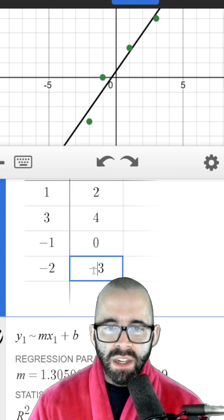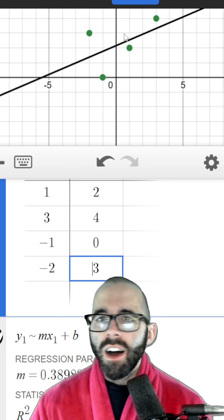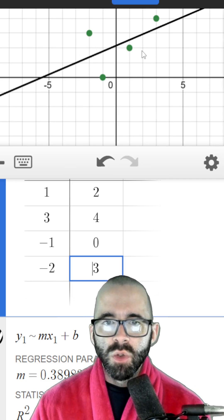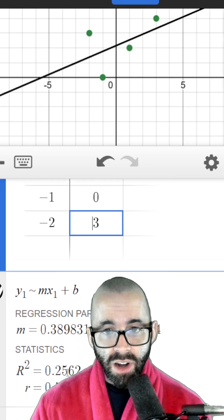You can see if I change this point to a positive three, put this green dot way up here, our data is much less like a line. This black line is much worse. Now our R squared is much closer to zero.